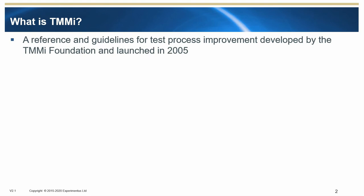The Test Maturity Model Integration (TMMI) is a detailed model for test process improvement. TMMI came about as a response to the fact that CMMI wasn't perceived as covering testing activities in enough detail to allow meaningful improvements to be measured. TMMI was developed in 2005 and uses the concept of maturity levels to allow organisations to methodically improve their test process maturity.